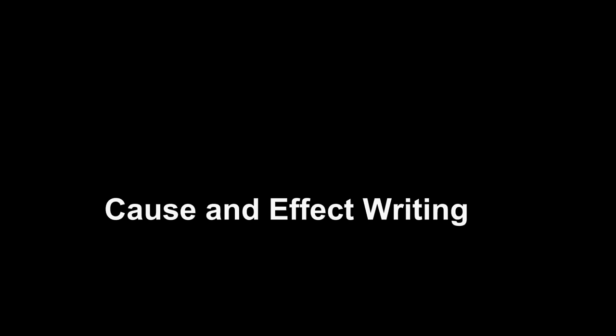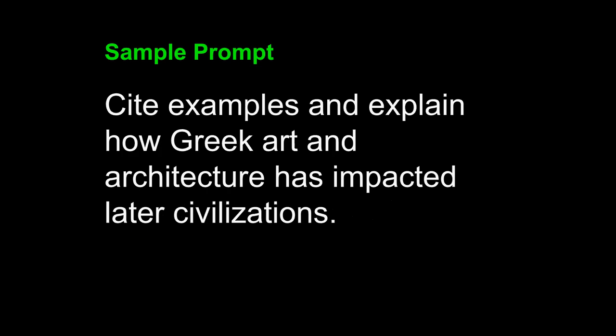The topic of this video is cause and effect writing, but if you have not watched the first video in the series, you should do so, because this video represents the third example of cause and effect writing revision. We are looking in this video at a third prompt: 'Cite examples and explain how Greek art and architecture has impacted later civilizations.' This is looking for cause and effect — how Greek art and architecture as the cause has affected later civilizations.